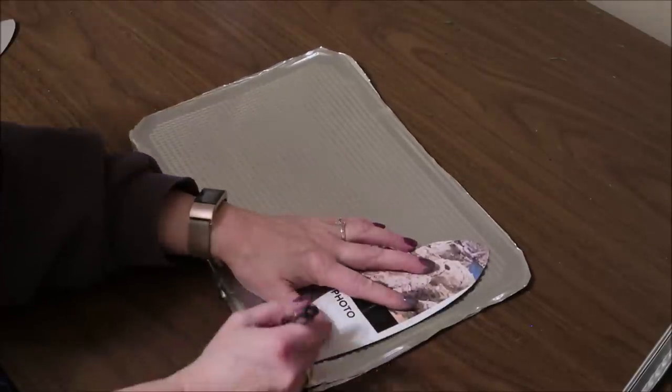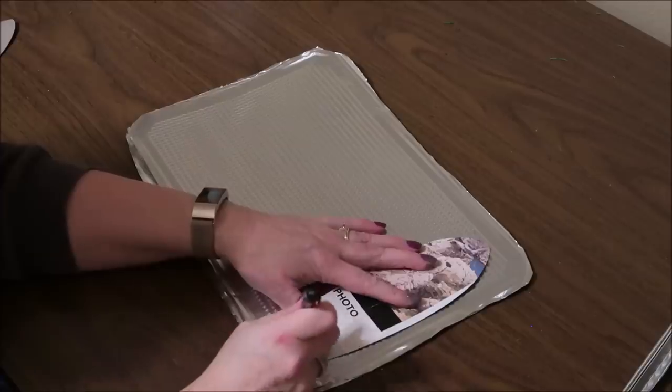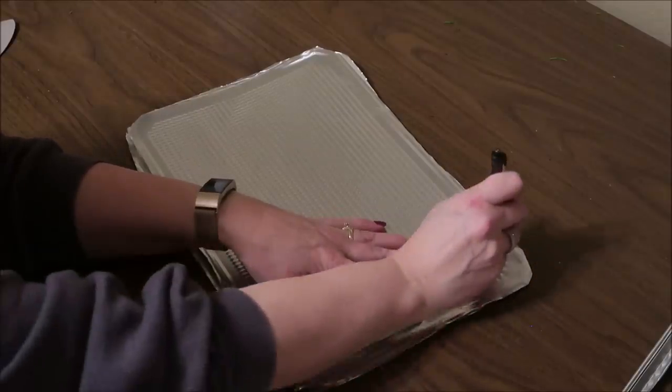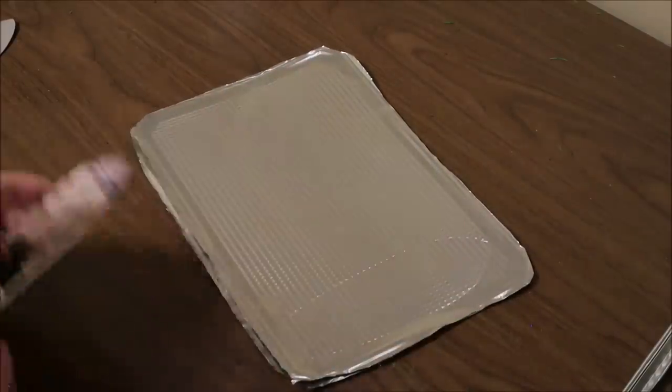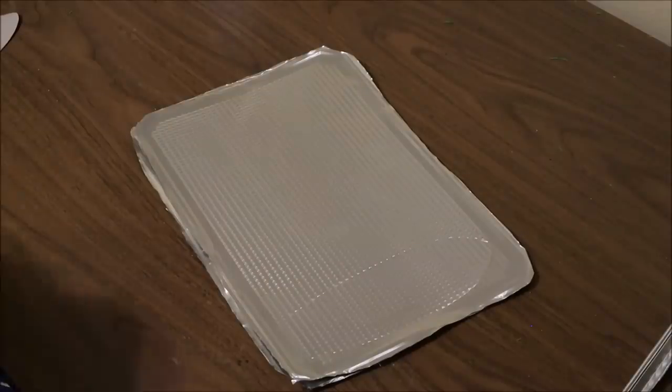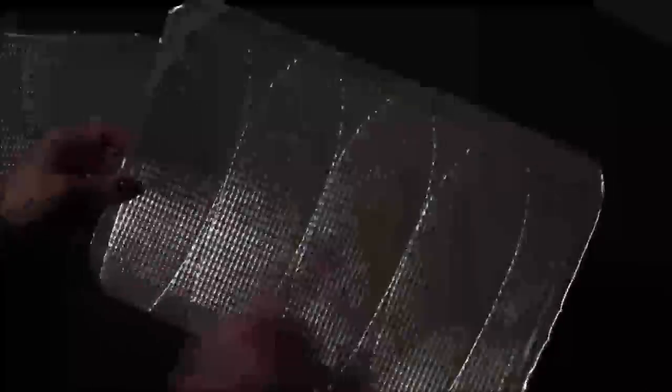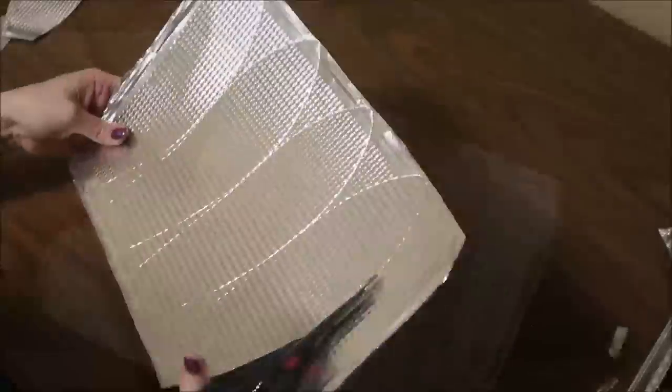I'm just going to trace my pattern using a pen or pencil. I found with the large petals I could get four on a sheet, and then I just put two of the sheets together and cut them out at the same time. It was really easy to cut through two thicknesses of this with the scissors.